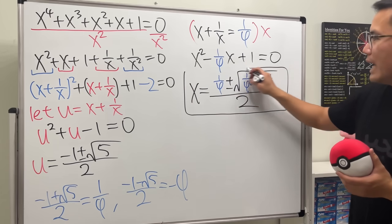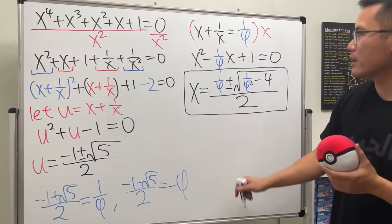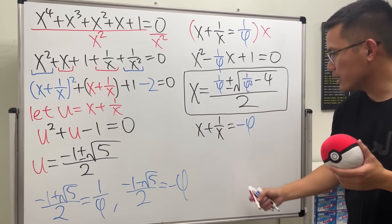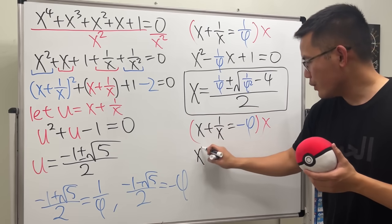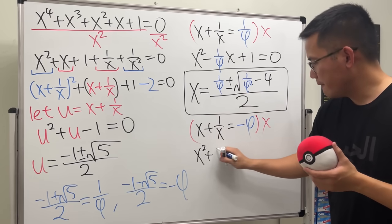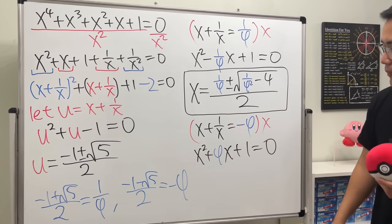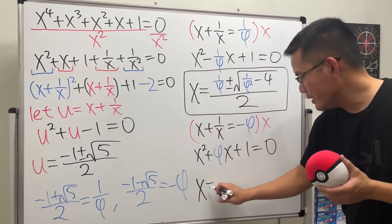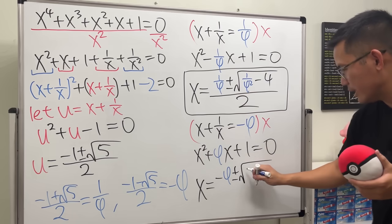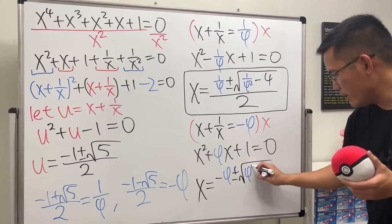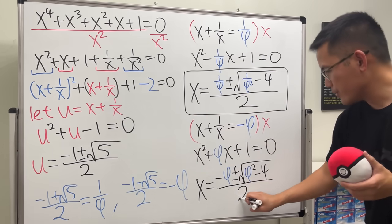For the second case, x plus one over x equals the negative golden ratio, phi. Multiplying through by x gives x squared plus phi times x plus one equals zero. Applying the quadratic formula again, x equals negative phi plus or minus the square root of phi squared minus four, all over two. This gives us the remaining two solutions.